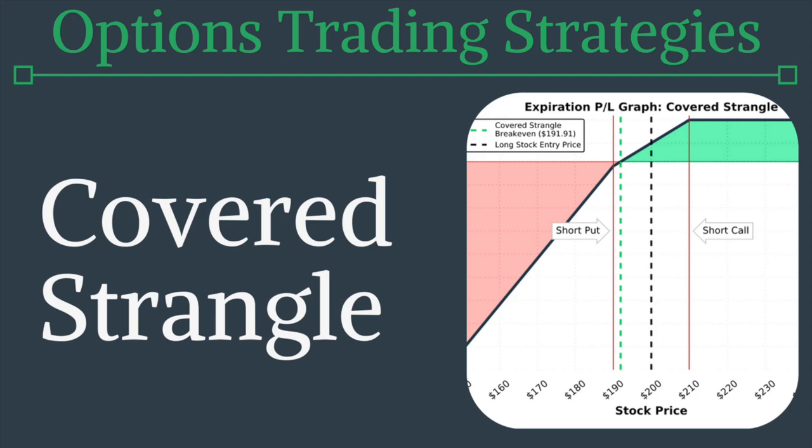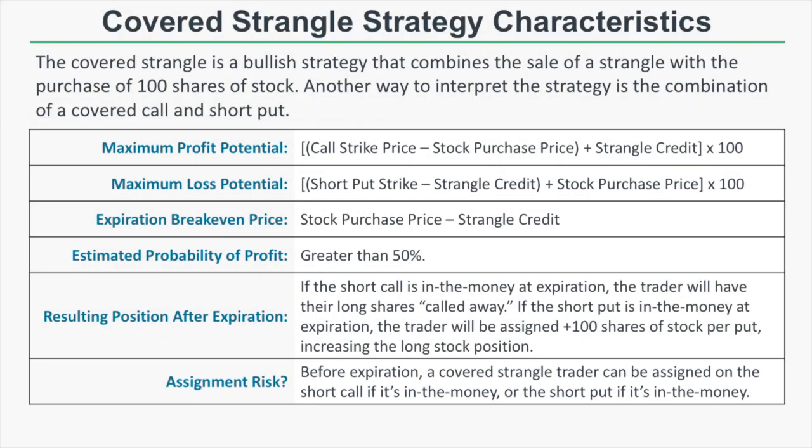The covered strangle is a bullish strategy that combines the sale of a strangle with the purchase of a hundred shares of stock. Another way to interpret the strategy is the combination of a covered call and a short put, which are both bullish strategies.